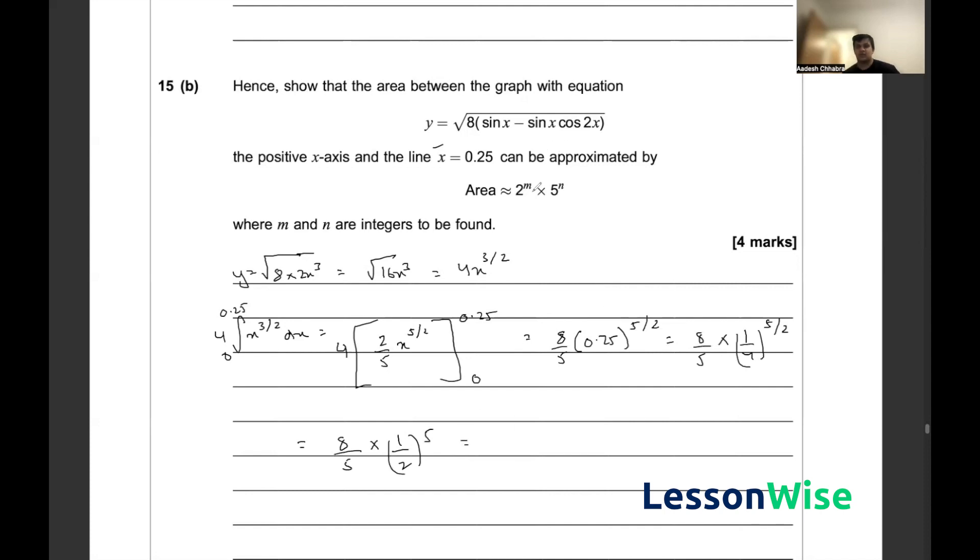Bringing this into powers of 2 and 5, this can be written as 2 to the power of 3 divided by 5 times 1 upon 2 to the 5. This can be rearranged in the form of 2 to the power of 3 divided by 2 to the power of 5 times 1 upon 5.